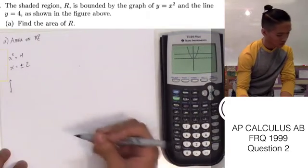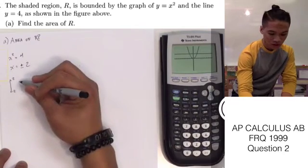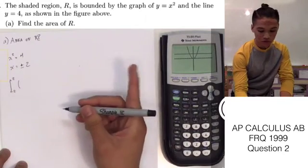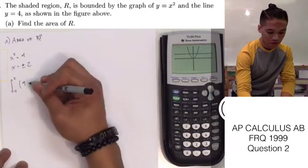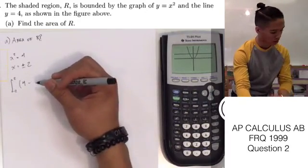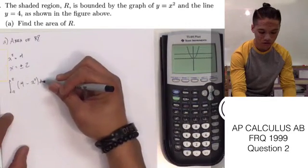It's the integral from negative 2 to 2 of our top function, which is 4, and our bottom function—we're going to subtract the bottom function from it, which is x squared dx.